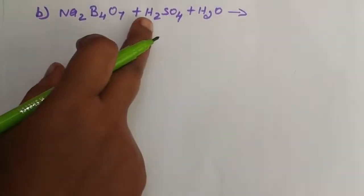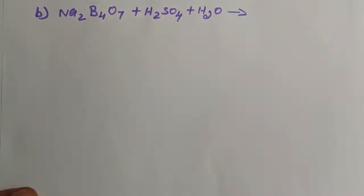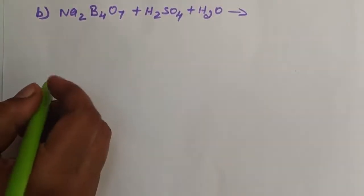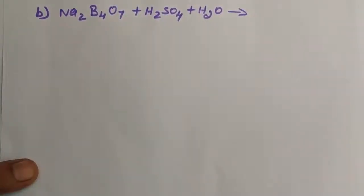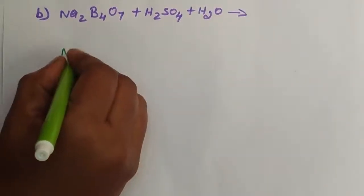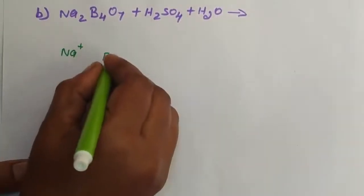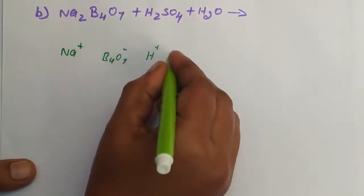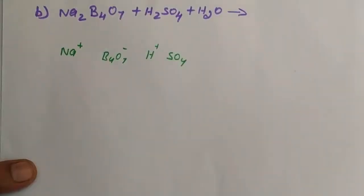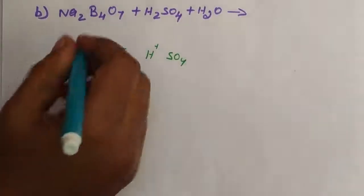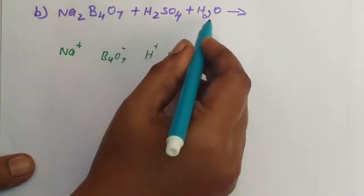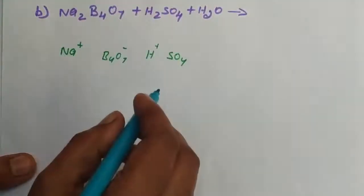Next question: Na2B4O7 reacts with sulfuric acid and water. First, split Na2B4O7 into Na plus and B4O7 minus. Then sulfuric acid splits into H plus and sulfate minus. The reactants include boron and H2O, which must form boric acid.